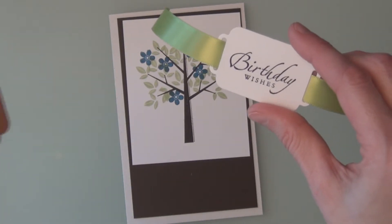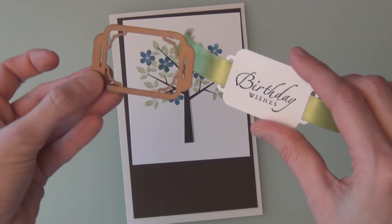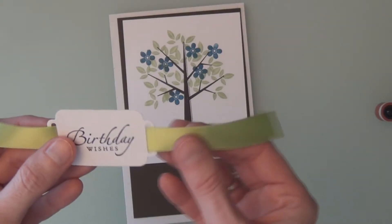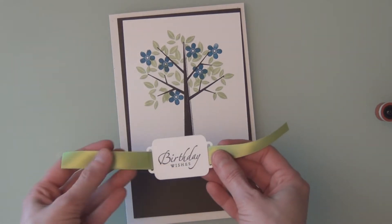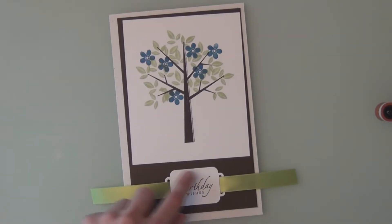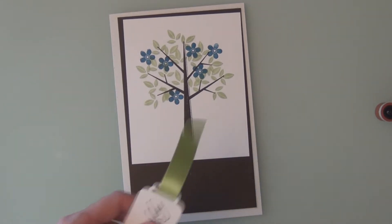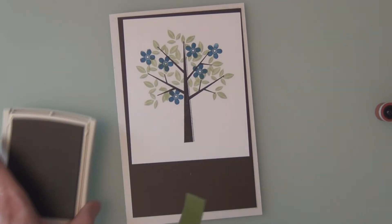Ribbon Tag Trio No. 2. I used this shape here. I found some ribbon that matches closely to the Pear Pizzazz that I stamped the leaves in. And I am going to sponge around this using the Island Indigo.